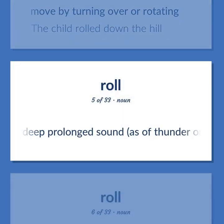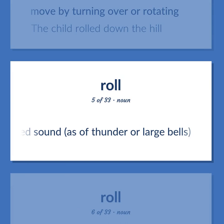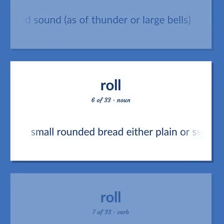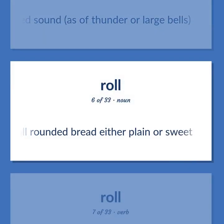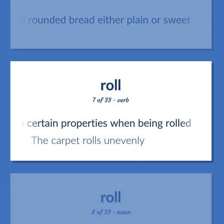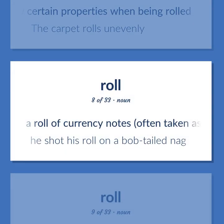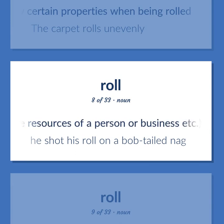Roll: a deep prolonged sound as of thunder or large bells. Small rounded bread, either plain or sweet. To show certain properties when being rolled — the carpet rolls unevenly. A roll of currency notes, often taken as the resources of a person or business — he shot his roll on a bob-tailed nag.